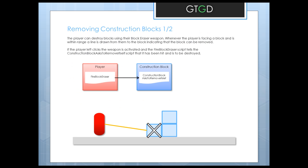Let's describe how the system works. The player has a new weapon called the block eraser. When they're facing a block and within range, a line will be drawn from them to that block, indicating the block can be removed. When the player left-clicks to activate the block eraser weapon, the fire block eraser script will tell the construction block asked to remove itself script — attached to that construction block — that it has been hit and is to be destroyed.